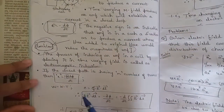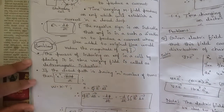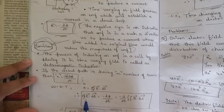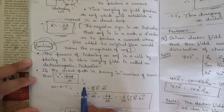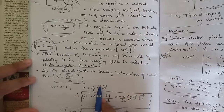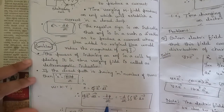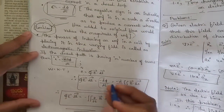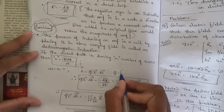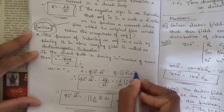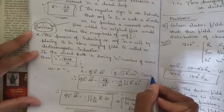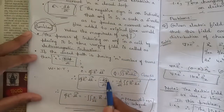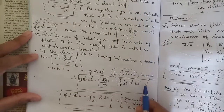Since E equals the line integral of E·dl, we can write: ∮E·dl = -dφ/dt. Taking d/dt inside, and substituting φ = ∯B·ds (which comes from Gauss's law), we get: ∮E·dl = -∯(∂B/∂t)·ds. In place of φ, I have written the surface integral of B·ds.